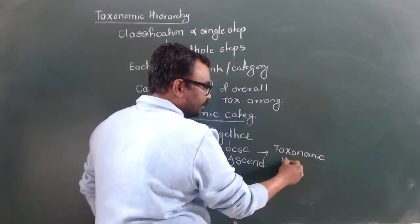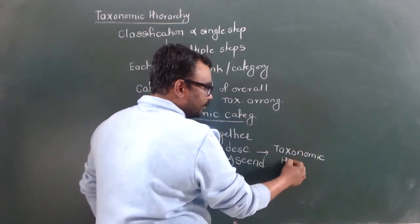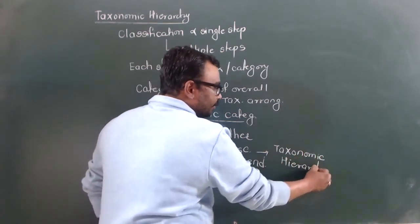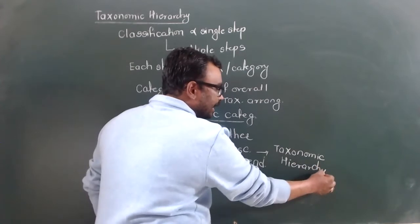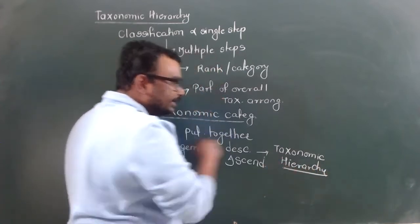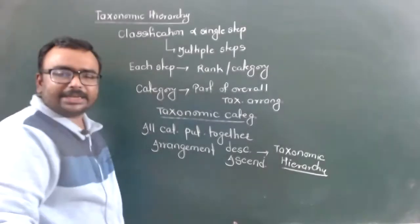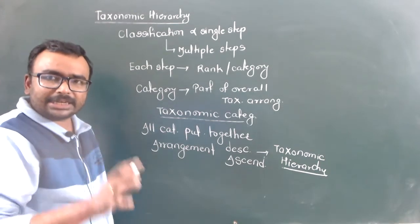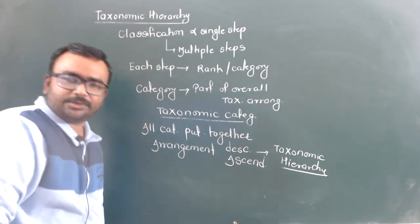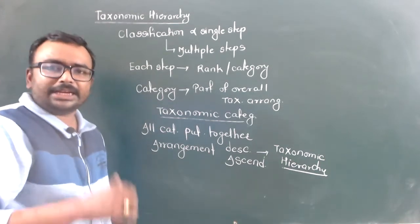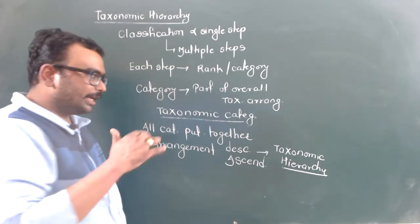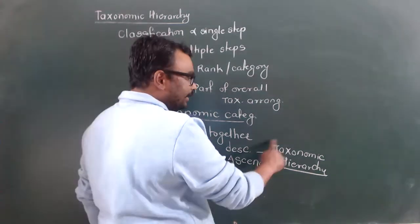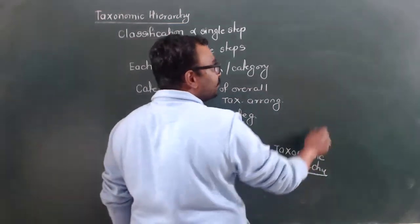When all categories are put together, the arrangement is called taxonomic hierarchy. The hierarchy is tree-tiered — when you arrange the taxonomic categories in a tree-like pattern, that forms the taxonomic hierarchy.